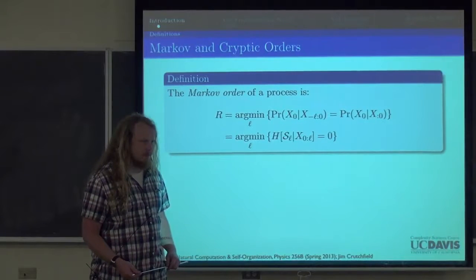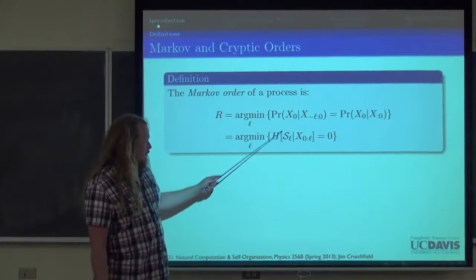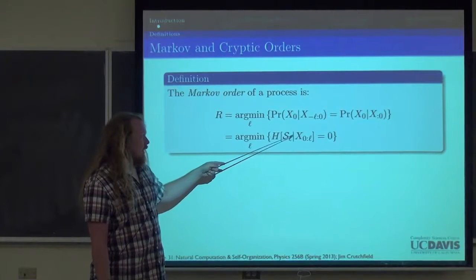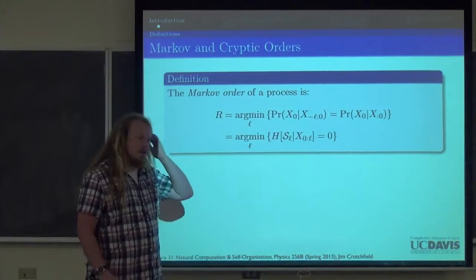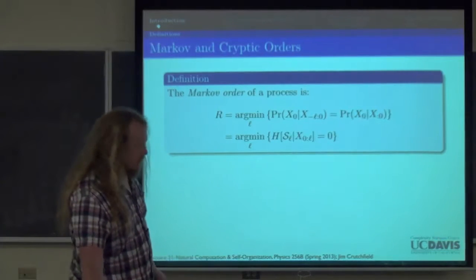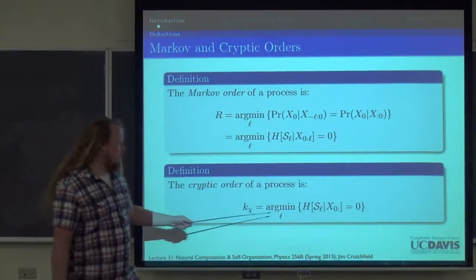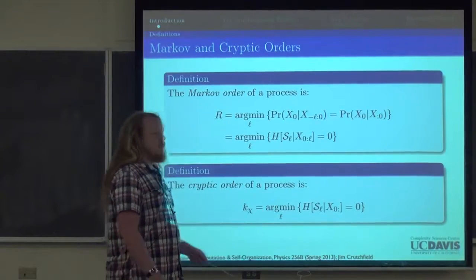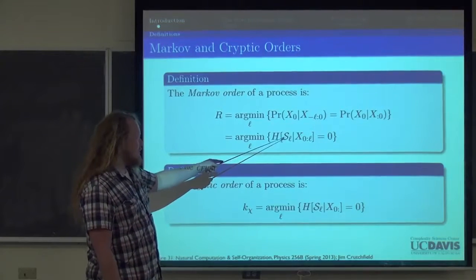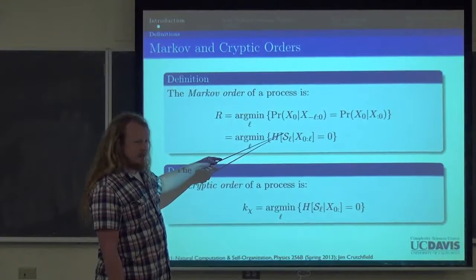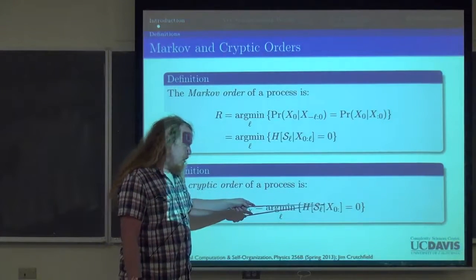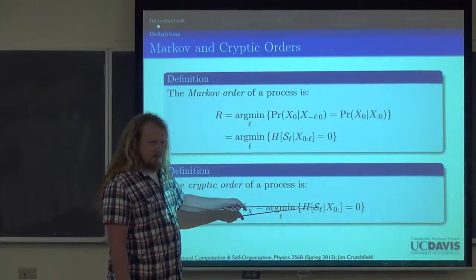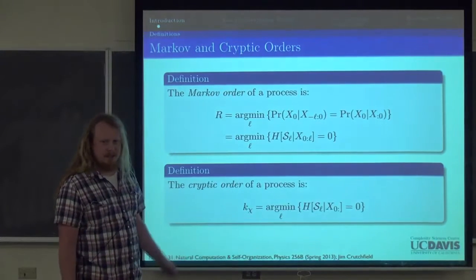Because these processes are stationary, we can shift the index we call zero anywhere we want, and writing it this way will make more sense when we define the cryptic order. The cryptic order follows the same equation except instead of a finite block, we consider an infinite block. This says: given that we see the entire future, at what point do we know exactly what state we're in? We'll see some examples of what this means concretely very soon.